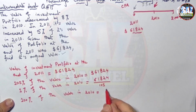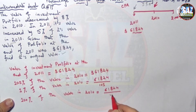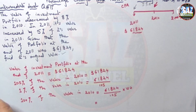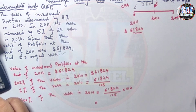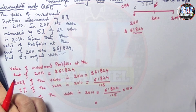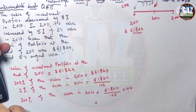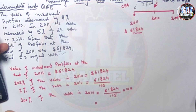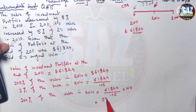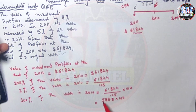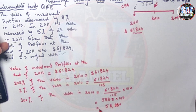The value in 2010 is 61,824 divided by 105, multiplied by 100. Since these are big calculations you can use a calculator — such questions come in Paper 2. Calculating: 61,824 divided by 105 gives 588.8, multiplied by 100 gives $58,880. So the value in 2010 is $58,880.